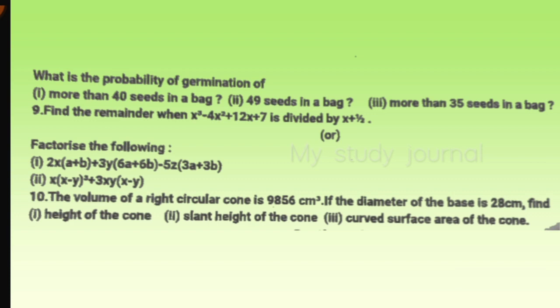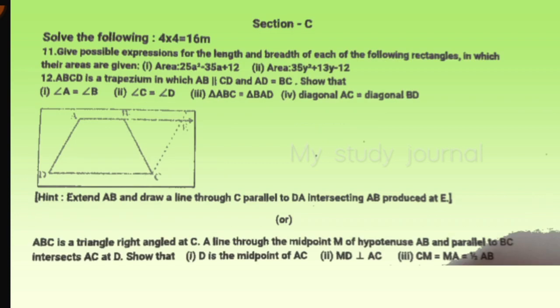This is the tenth question. Moving to Section C, the eleventh question asks to give possible expressions for the length and breadth of each of the following rectangles in which their areas are given. This is polynomials - it's there in our NCERT textbook too.